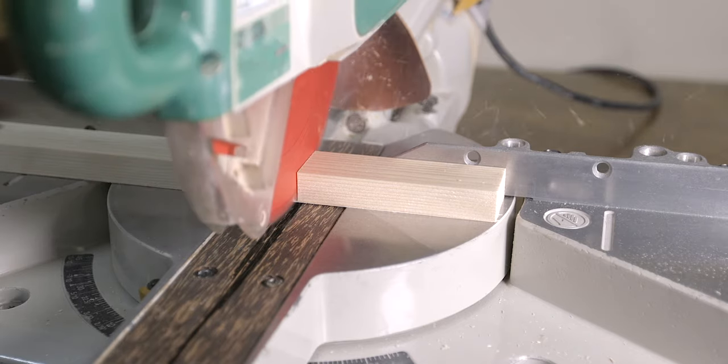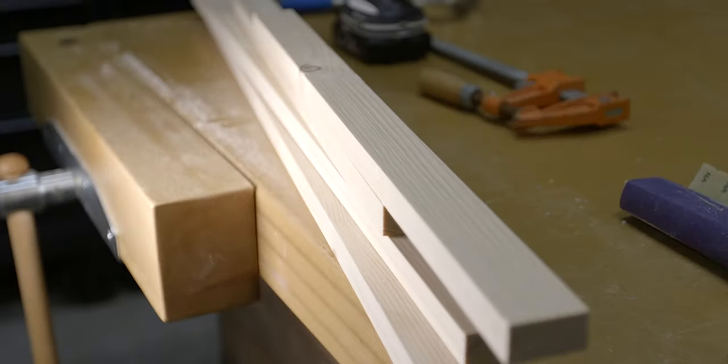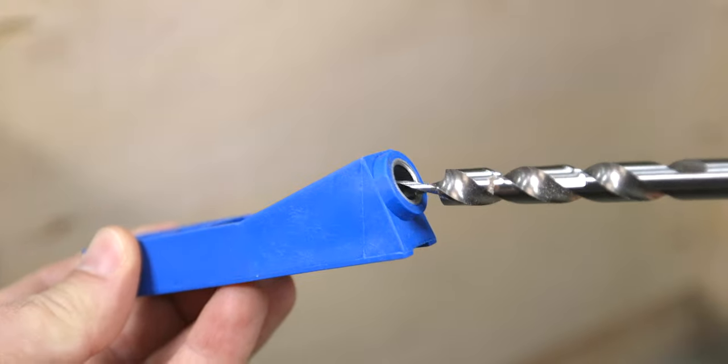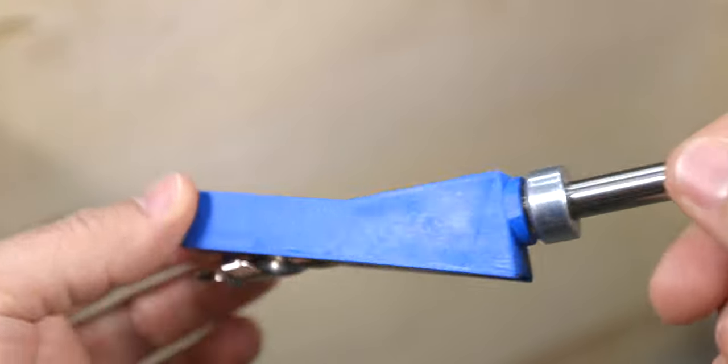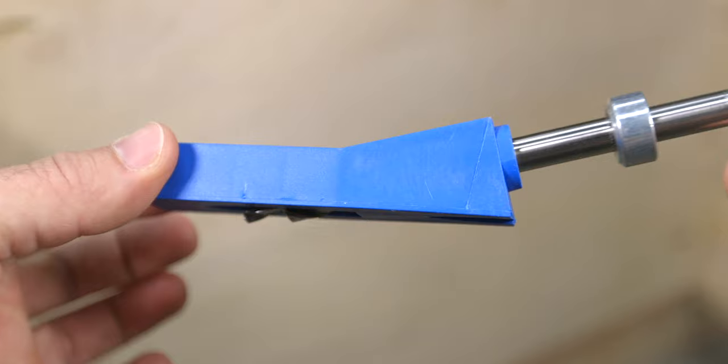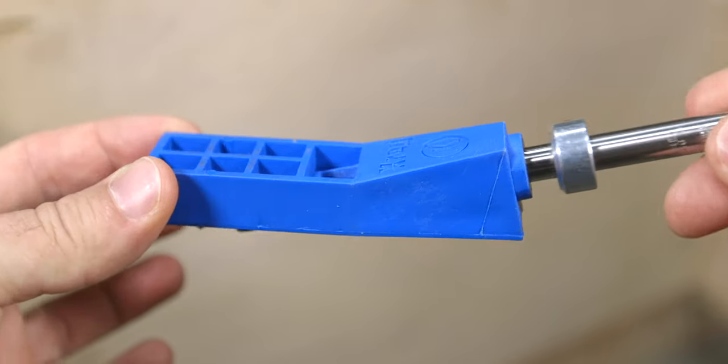With all four pieces cut to length, it's time to drill the pocket holes. Pocket holes are made from a jig like this which is made mostly of plastic but it has a metal sleeve that directs a drill bit at an angle into the wood.